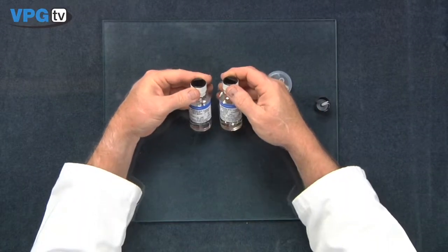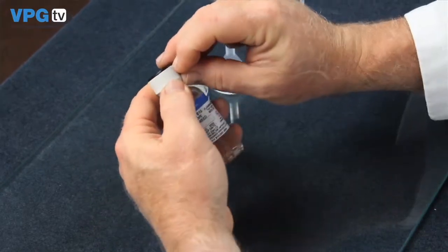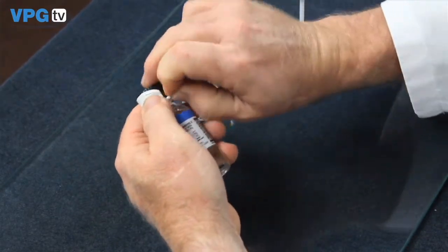Step one will be the proper mixing of the adhesive system. Before mixing, be sure to check the expiration date on the M-Bond 610 adhesive and curing agent bottles. Out of date materials should not be used.